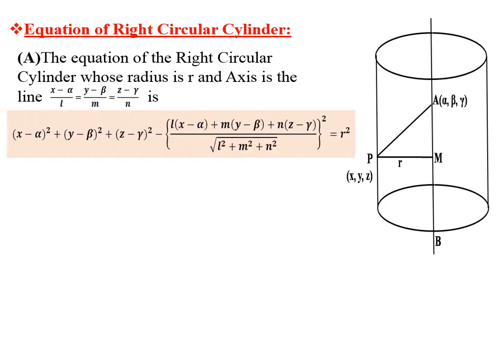This gives us the equation: (x − α)² + (y − β)² + (z − γ)² minus [(l(x − α) + m(y − β) + n(z − γ)) / √(l² + m² + n²)]² = r². This is the required equation of the right circular cylinder.